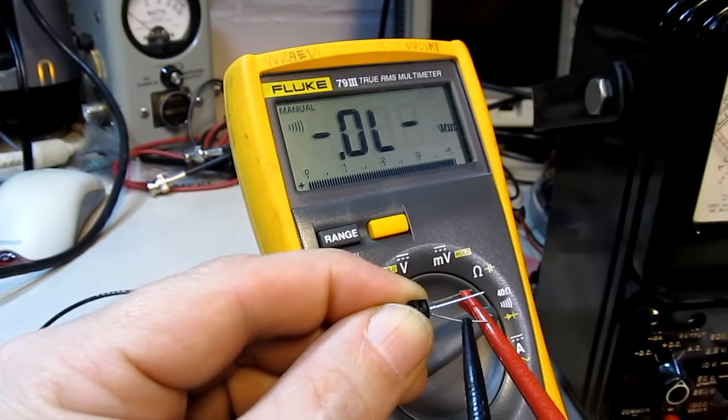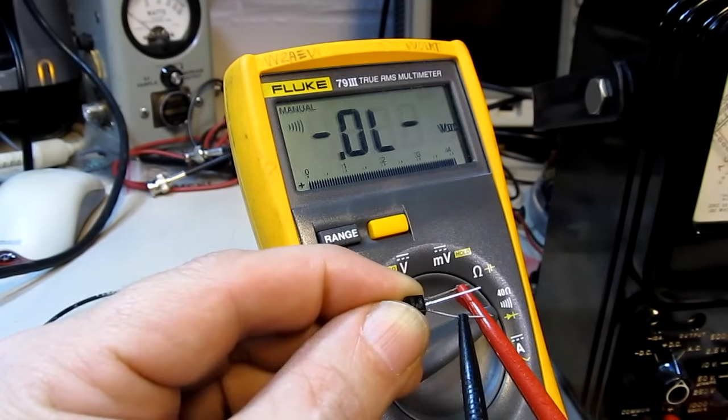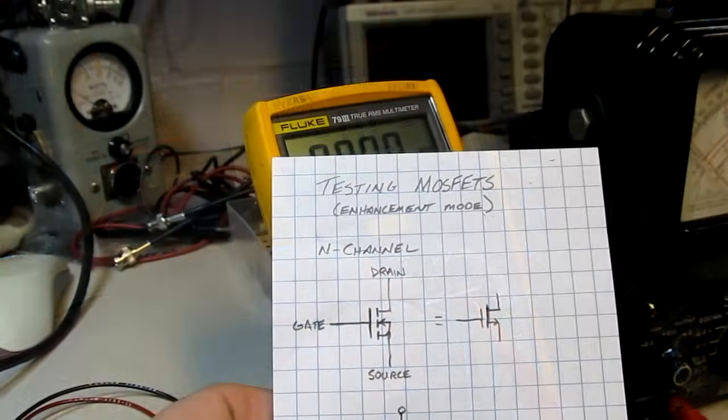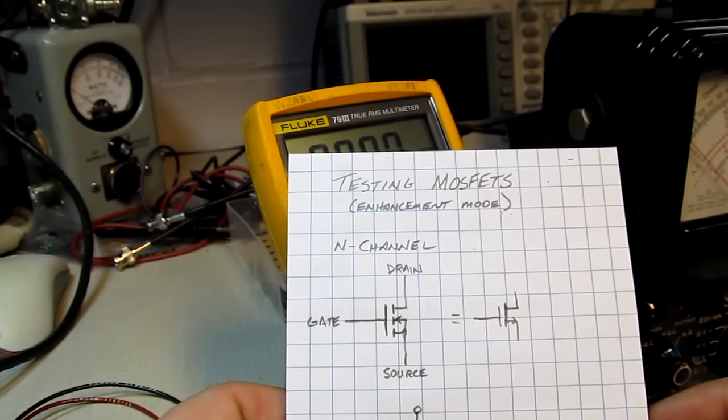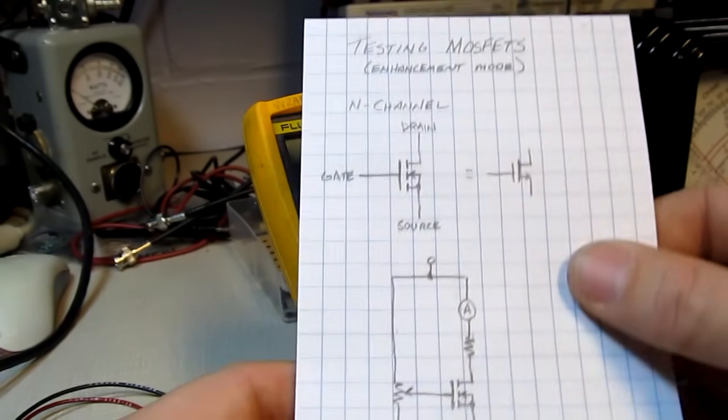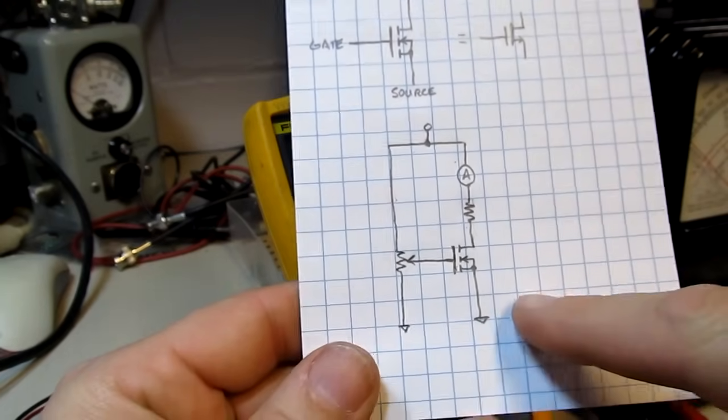So, there's a real simple way of testing the on and off state of a MOSFET. So, that test showed a real simple way of verifying the switch operation of a MOSFET. But if you want to take it a step further, you can put this very simple circuit together on a protoboard.